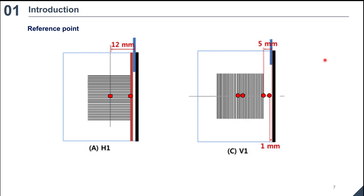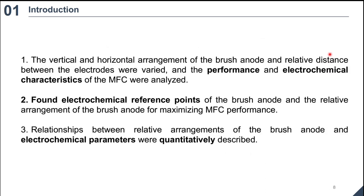To this end, we need to know an electrochemical reference point of the brush anode. At present, it is not known which point is good for an electrochemical reference point of the brush anode. Thus, the following research was conducted in this paper. First, the vertical and horizontal arrangement of the brush anode and relative distance between the electrodes were varied, and the performance and electrochemical characteristics of the MFC were analyzed. Second, found electrochemical reference points of the brush anode and the relative arrangement of the brush anode from maximizing MFC performance. Third, relationships between relative arrangements the brush anode and electrochemical parameters were quantitatively described.